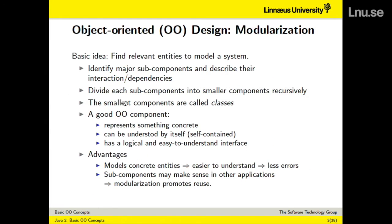A class is our basic building block. In the end, our entire program will be a large number of classes that are interacting in different ways to solve the problem. A good component, at least in an object-oriented program, represents something concrete. You should try to find components that represent a student, an employer, a record, or something like this — something concrete — and then make one class or a few classes to model each one of them.